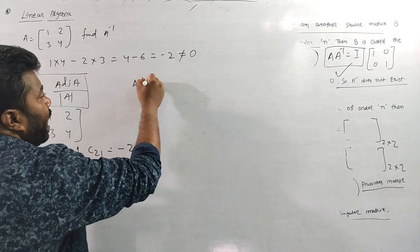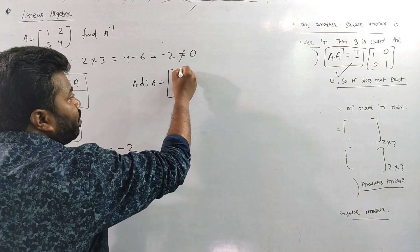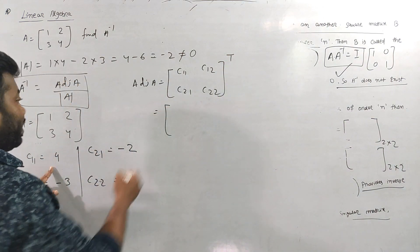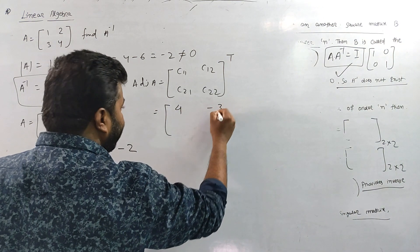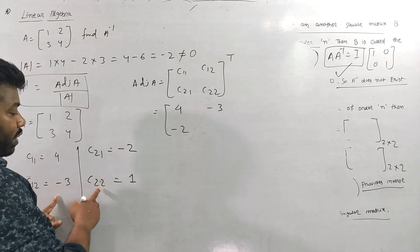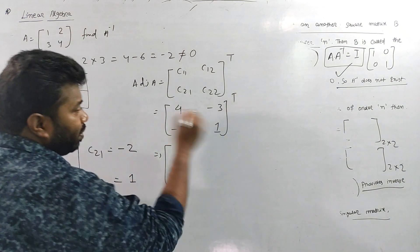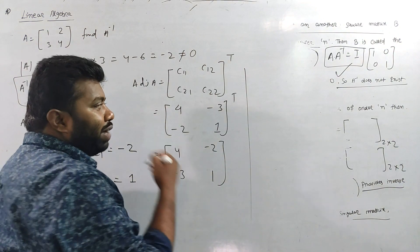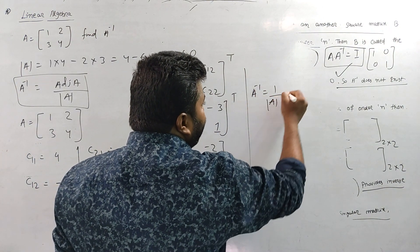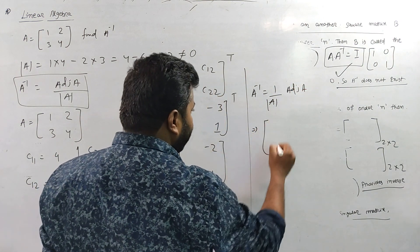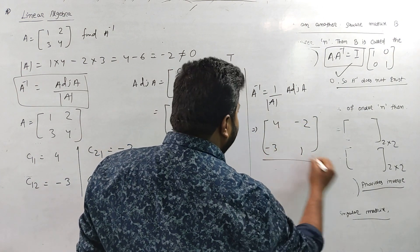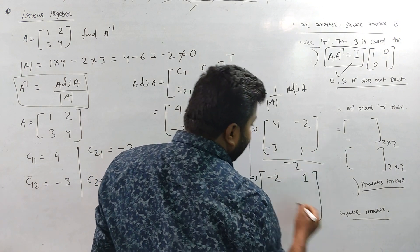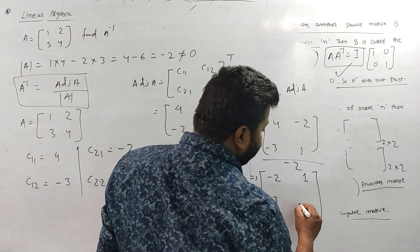Adjoint A is the transpose of the cofactor matrix [C11, C12; C21, C22]. Dividing each element by mod A which is minus 2: 4 by minus 2, minus 2 by minus 2, minus 3 by minus 2, and minus 1 by minus 2. This gives us A inverse.